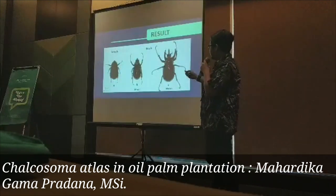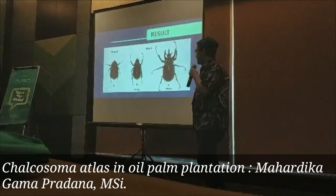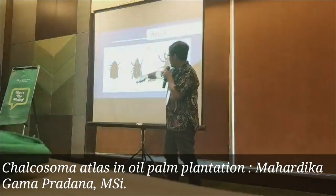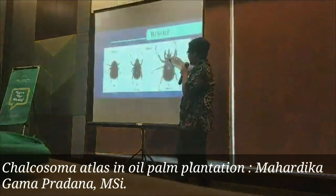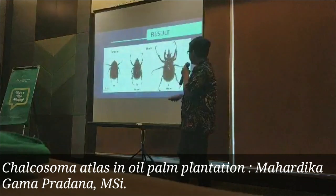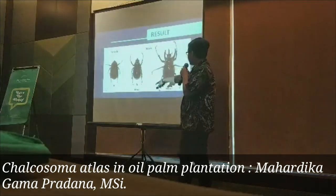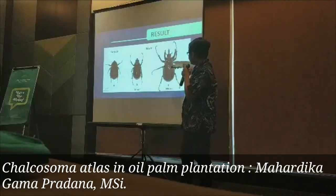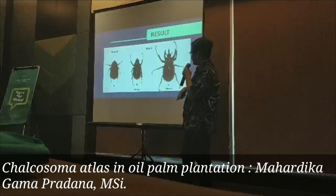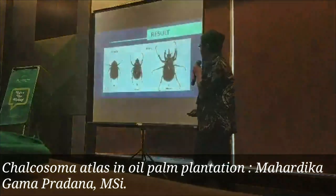In Chalcosoma atlas, there is sexual dimorphism. The female has no horn, while the male comes in two types: the minor and the major. The major male has a longer horn and a more black polished body.